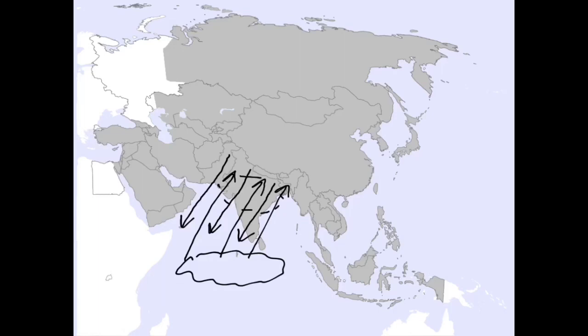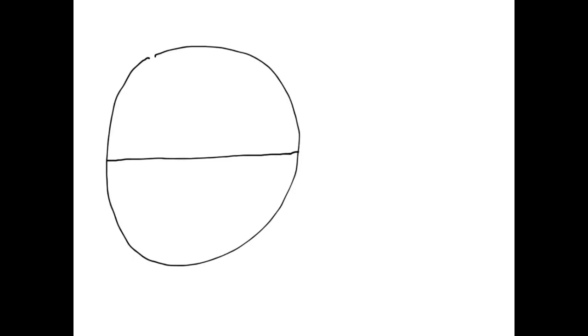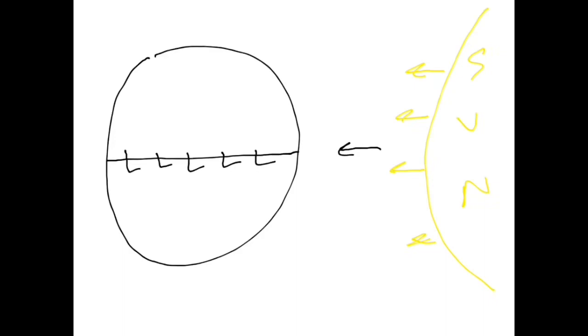So now the question is why. What I'd like to do is draw planet Earth with the equator, and also draw the Sun. If the equatorial zone is receiving a lot of direct solar radiation, then we know that this area is going to be pretty toasty — we have a lot of surface heating. And because we have a lot of surface heating, we're going to create a low-pressure zone around the equatorial region.